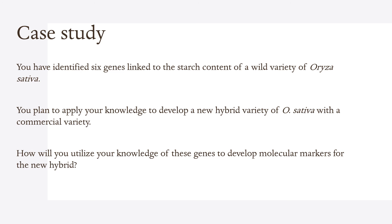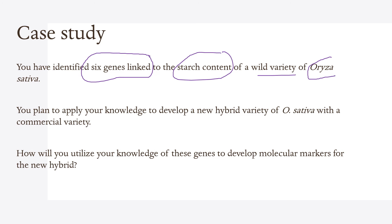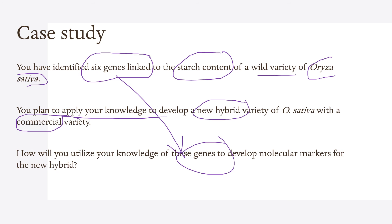That brings us to the end of the module, but before we end I will introduce you to a case study you can undertake as part of your exercise. In this case study, you as a researcher have identified six genes linked to the starch content in a wild variety of Oryza sativa, which is rice. You intend to apply your knowledge to develop a new hybrid of Oryza sativa with a known commercial variety. You must consider how you will utilize your knowledge of these six genes to develop molecular markers for the new hybrid. I will leave this for discussion. Thank you very much for watching and I hope you had a pleasant learning experience.